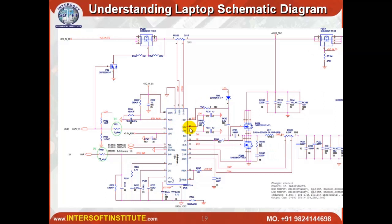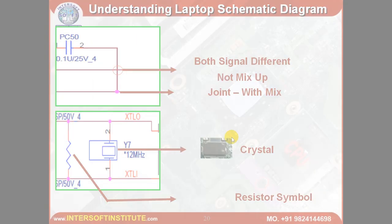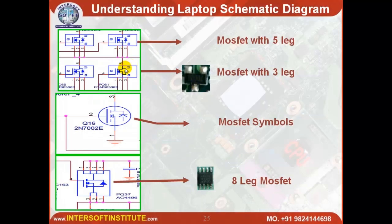In every 30 to 40 pages there are these types of diagrams. Here you can see the return, which voltage, which pin number. You can identify the pin number, the component output, where the output is going, on which page number, and what that page number contains — we will understand this.